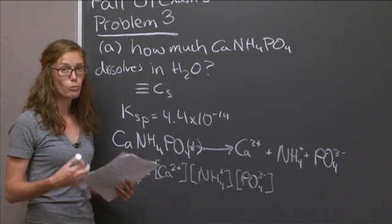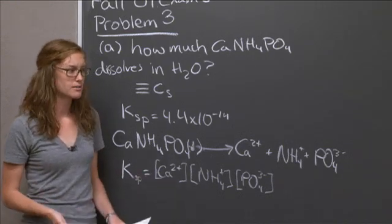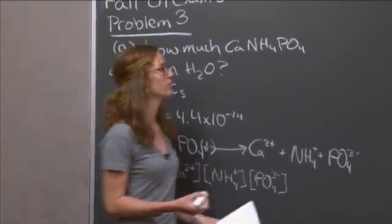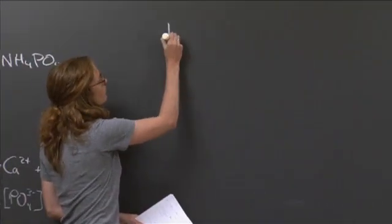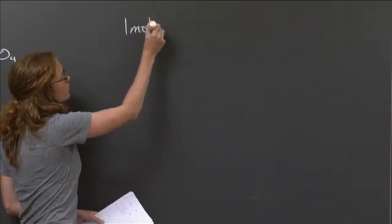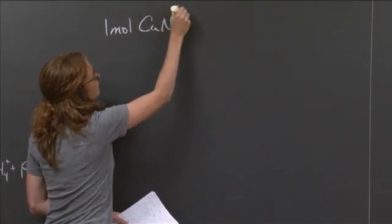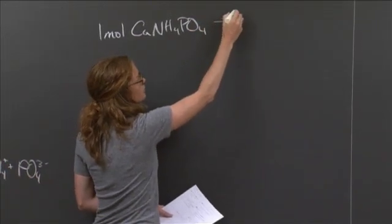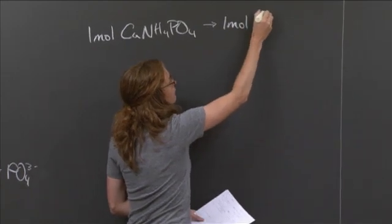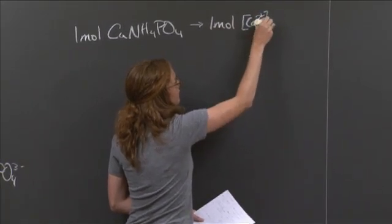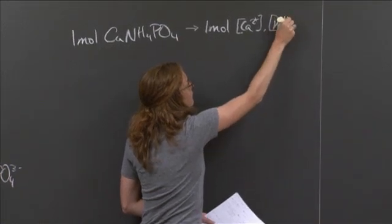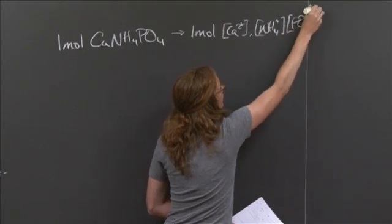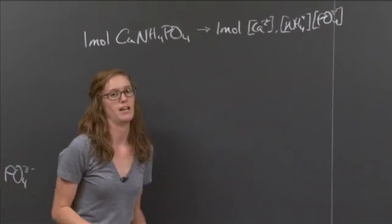So now we need to figure out what the solubility of the compound is. And to do that, we want to look at this chemical equation. We see that for 1 mole, so 1 mole of calcium ammonium phosphate dissolved gives you 1 mole of the calcium ion, the sodium ion, and the phosphate ion.